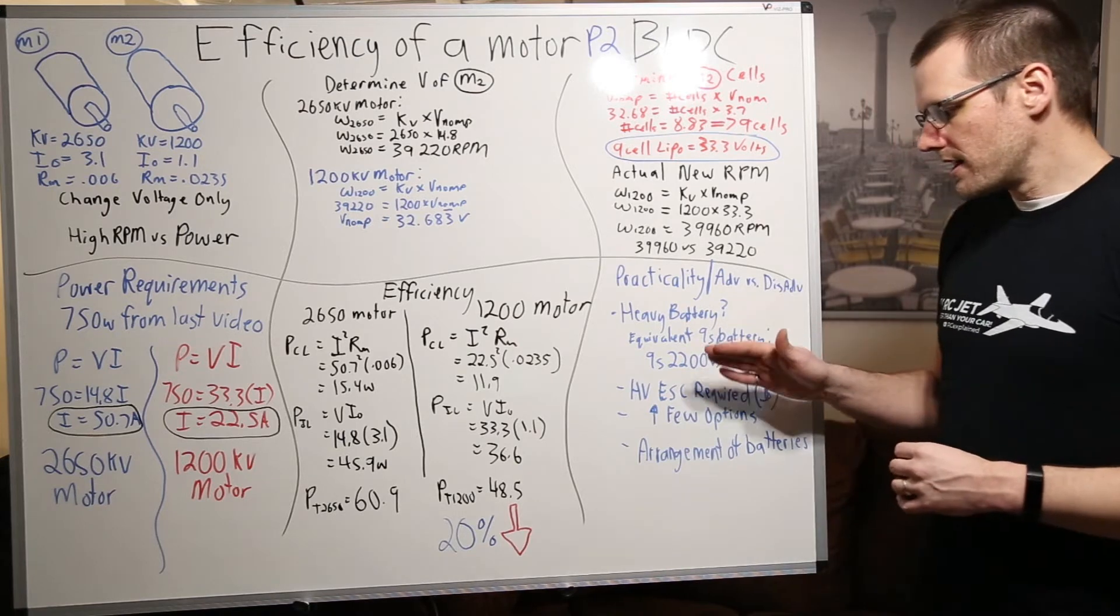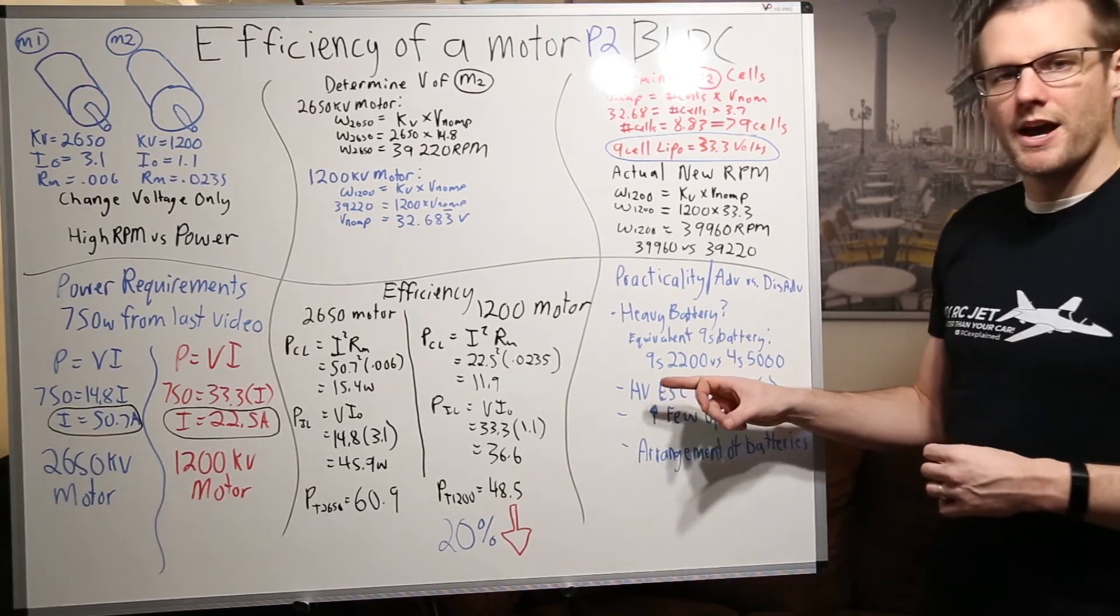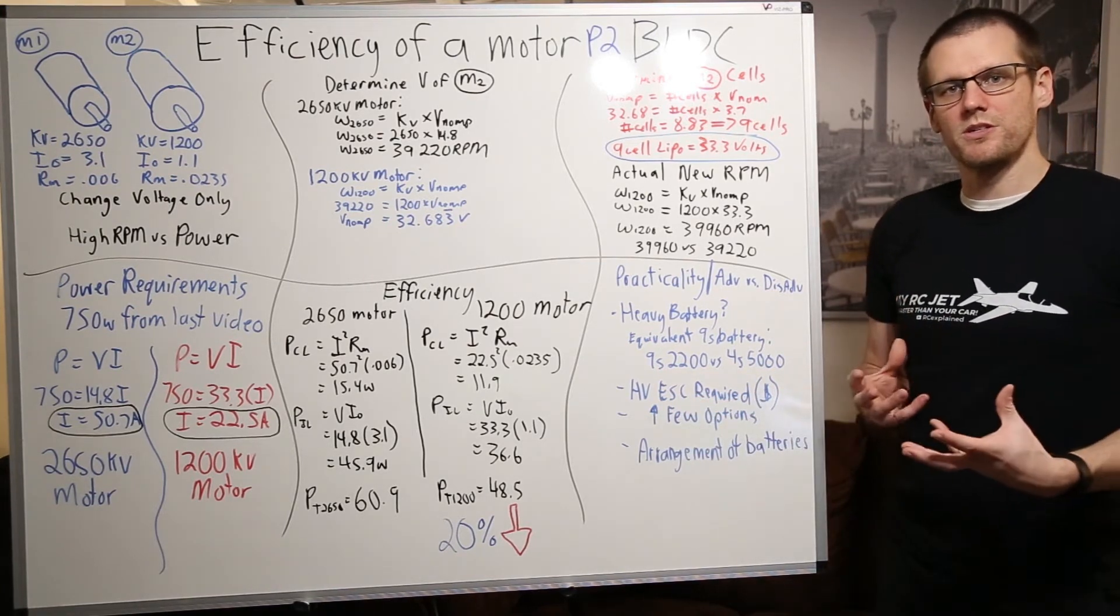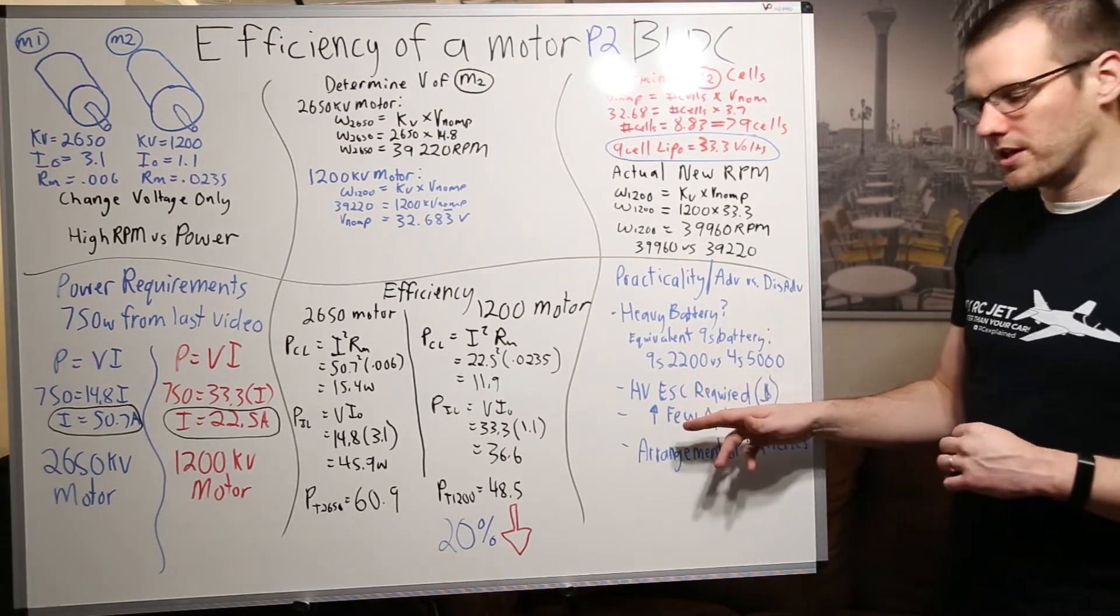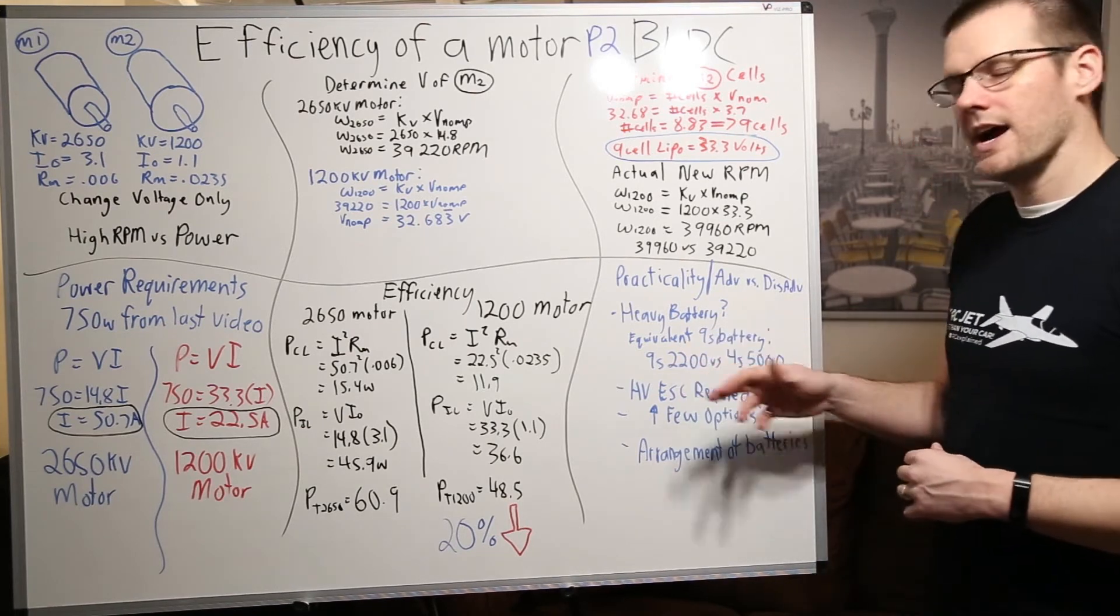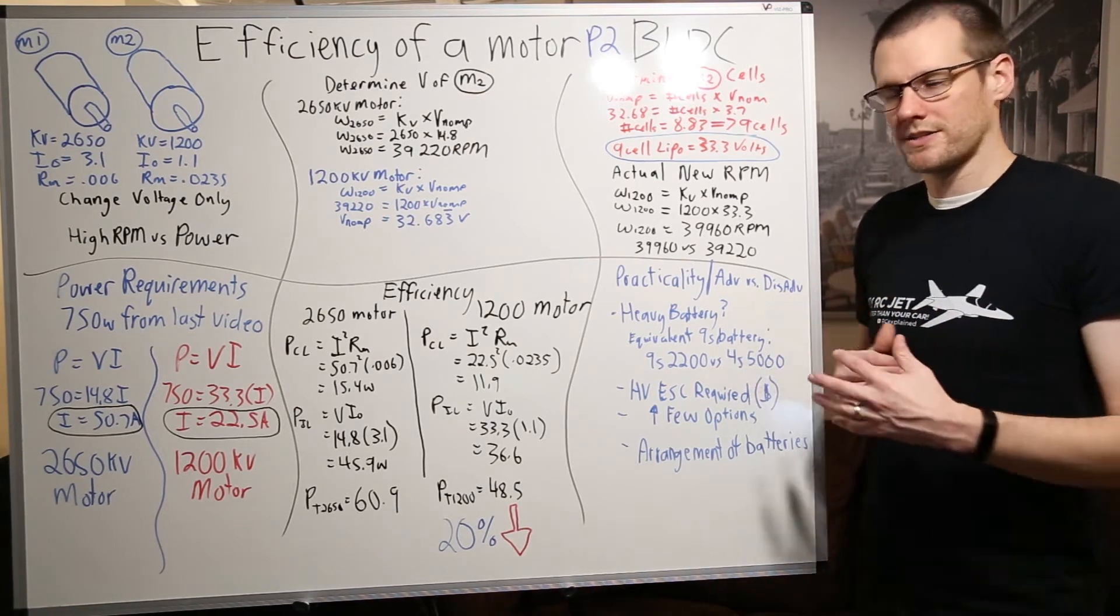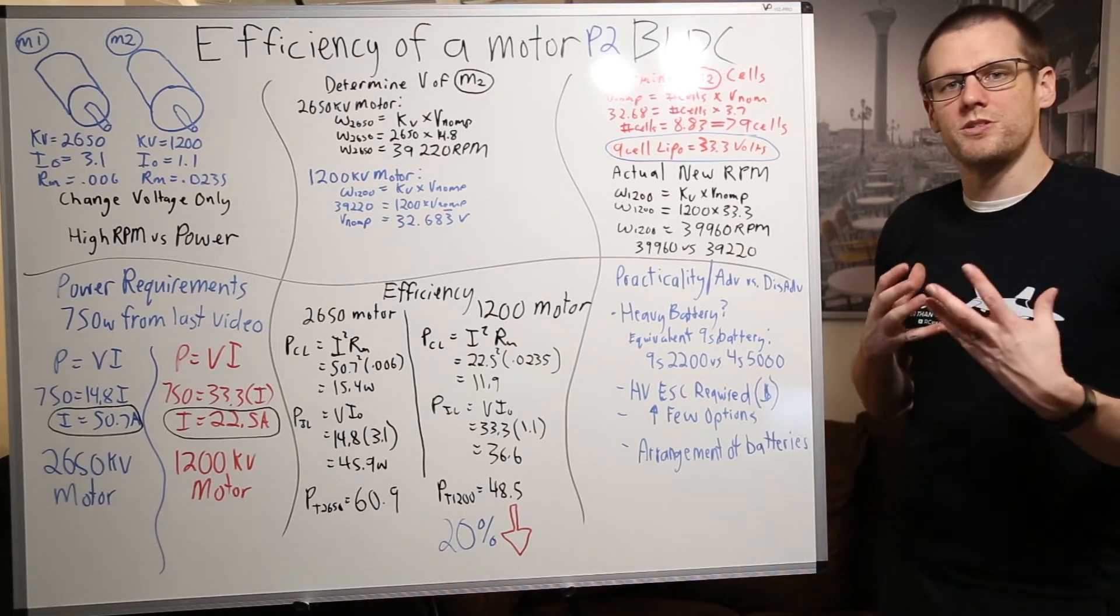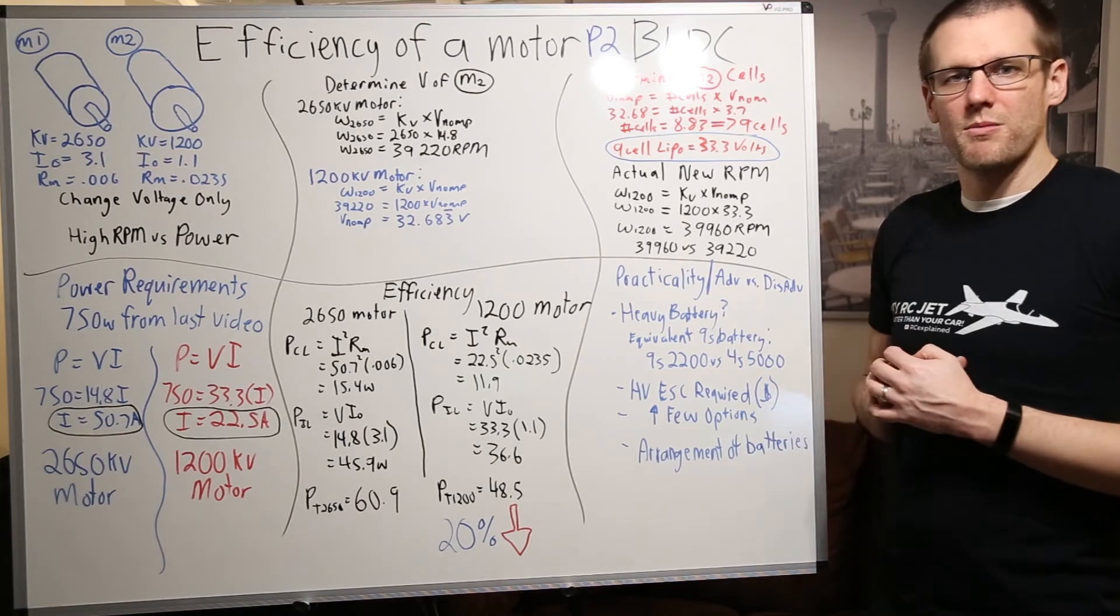Now the next thing that we have to cover is the speed control. Why? Because you need a high voltage ESC and it is going to cost some money. It's going to be more expensive than a typical speed control at 4s. Another item to note here is that the ESCs that are available especially at 9s. It's uncommon that you would see a radio control car ESC that can go above 8s. With that even being said there's very few ESCs that are going to be upwards of that higher voltage region. Typically you would see ESCs max out at about 8s.